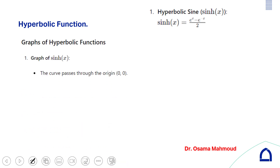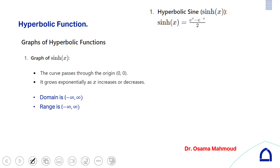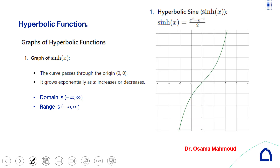The graph of sinh(x) passes through the origin. Its domain is minus infinity to infinity and its range is also minus infinity to infinity. The x-intercept is (0, 0) and the y-intercept is (0, 0). To the right the function is positive; to the left it is negative.